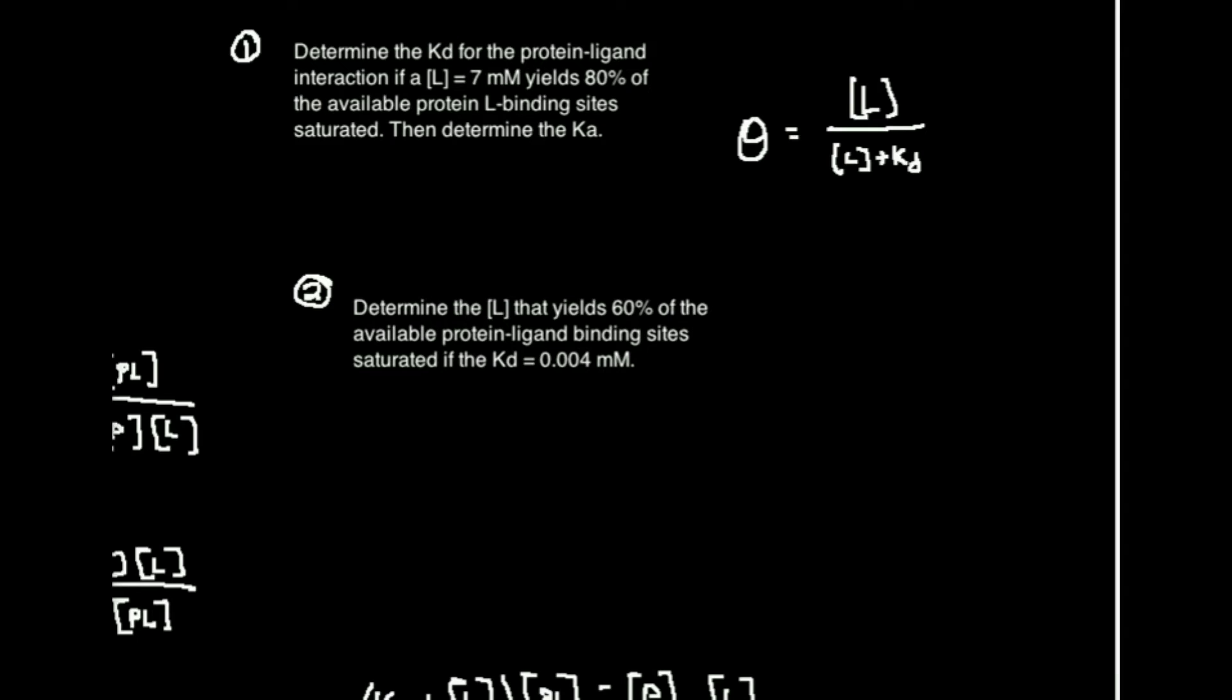What I'm going to do is multiply both sides by the denominator here. So what I get is theta times concentration of L plus Kd is equal to the concentration of L. And what I'm going to do now is foil, in other words distribute this theta to L, and then I'm going to distribute theta to Kd, so multiply everything out basically.